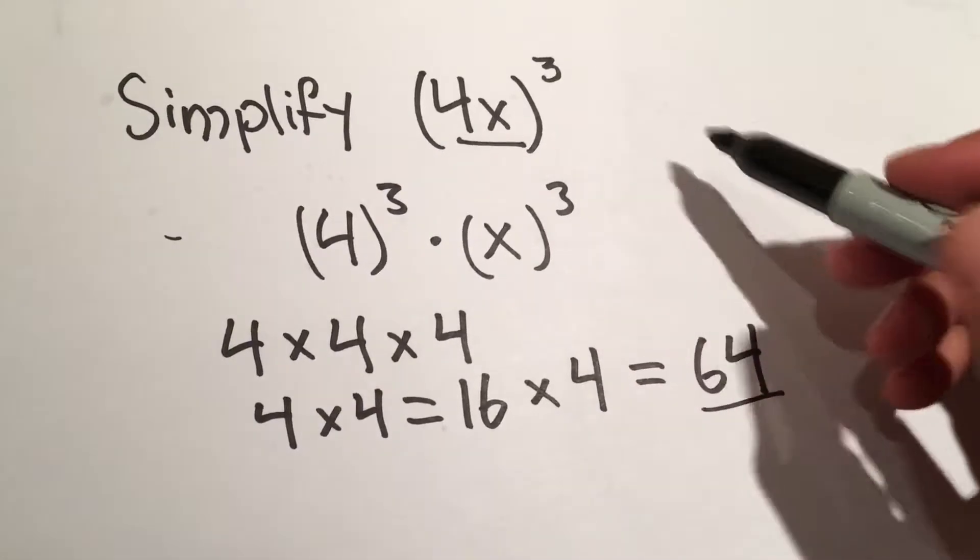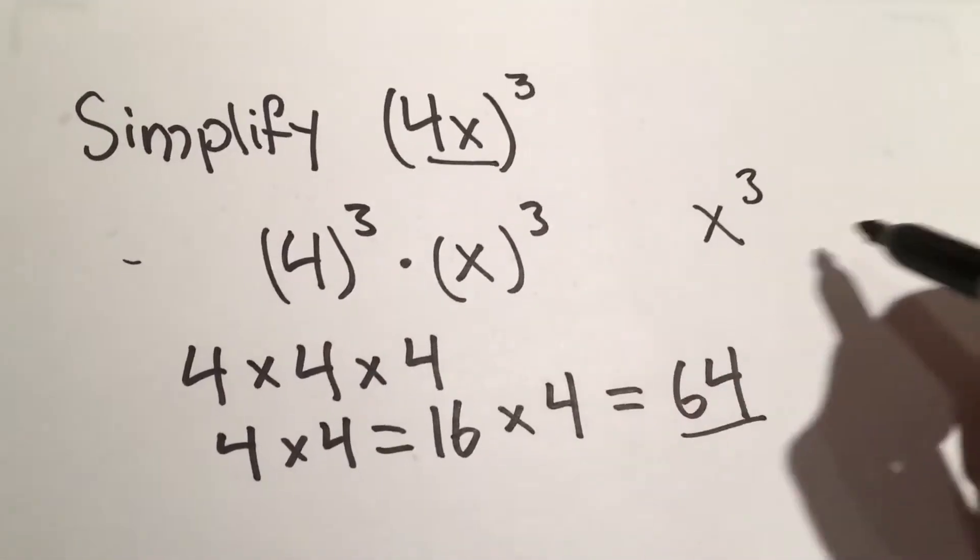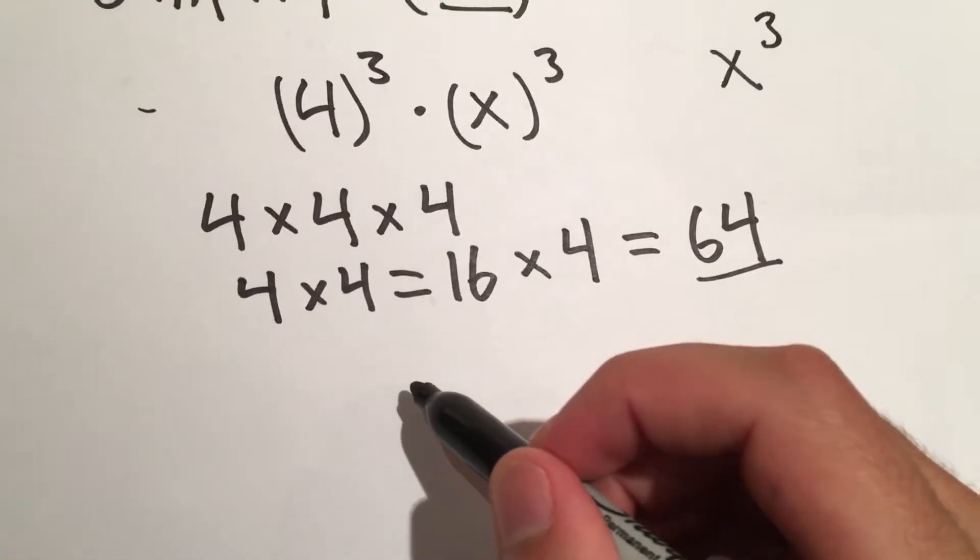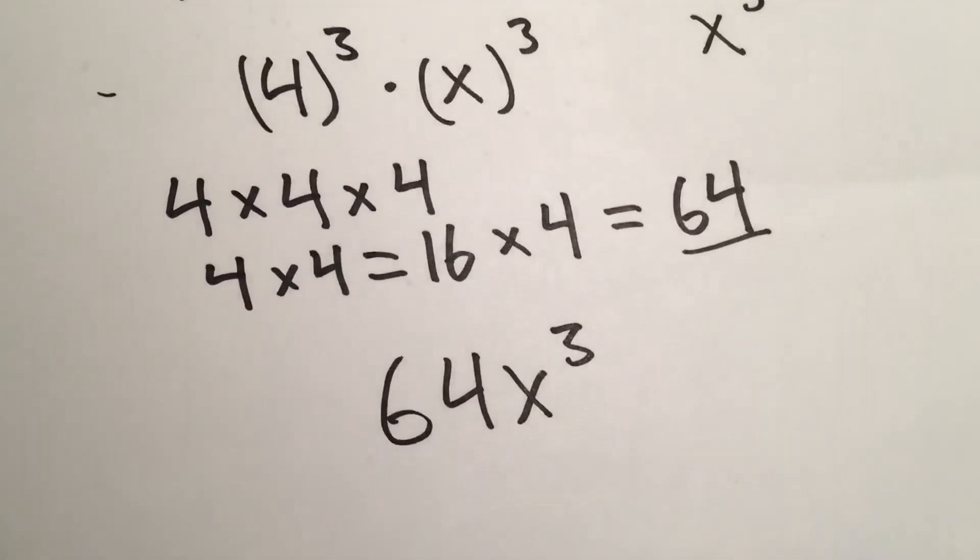And then x to the 3 just stays as x to the 3. We can't simplify that any further. So it's just going to become 64x to the third power.